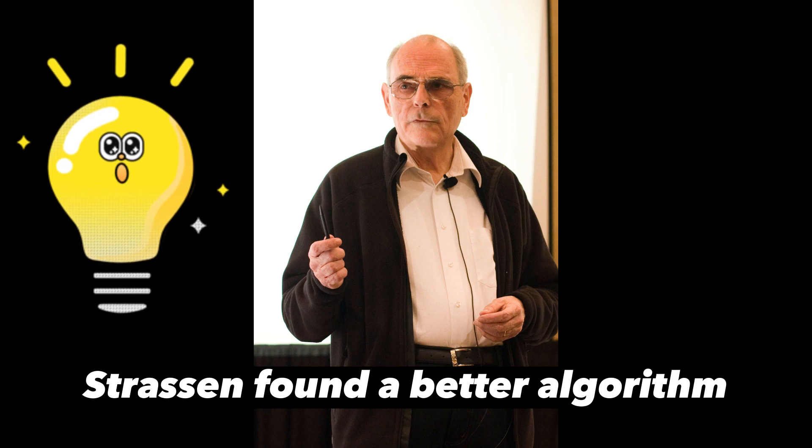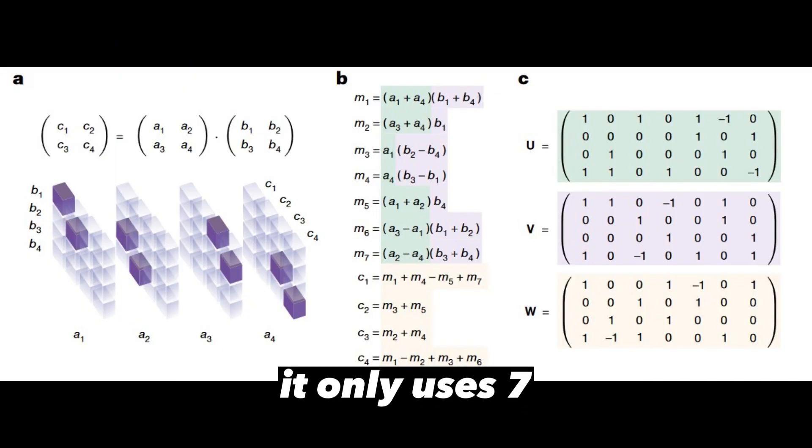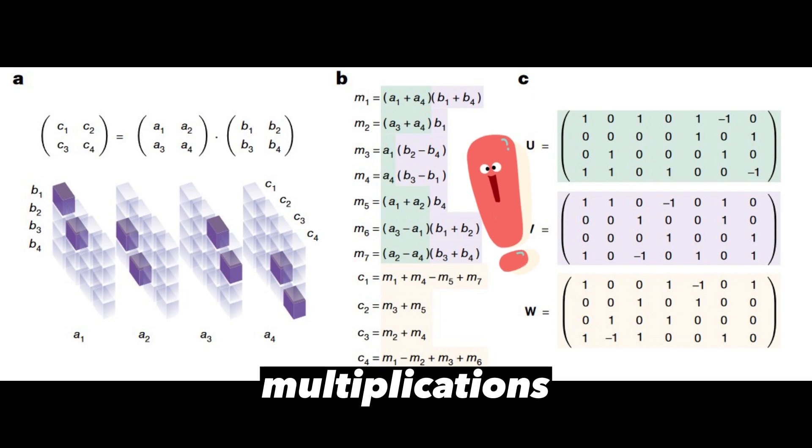Strassen found a better algorithm to do the multiplication. It only uses 7 multiplications instead of 8.